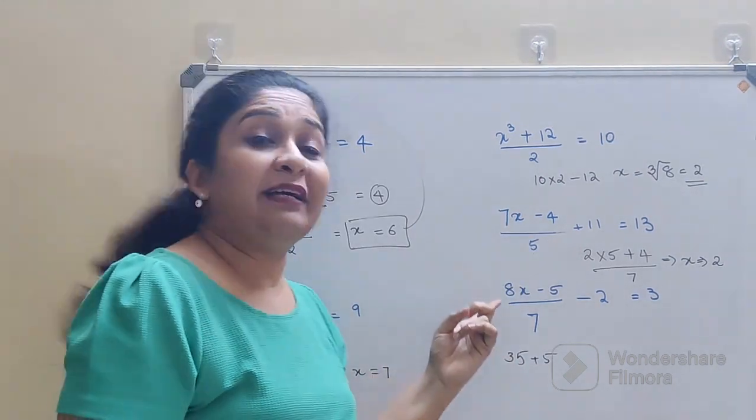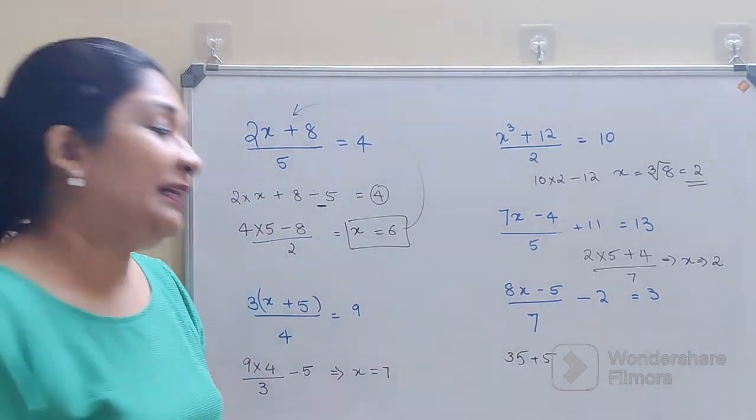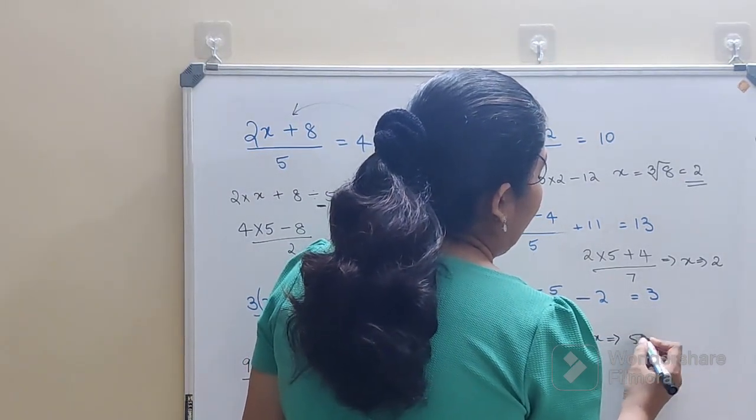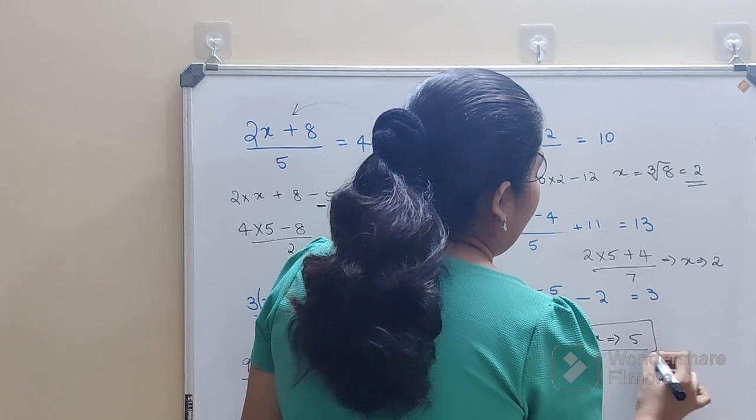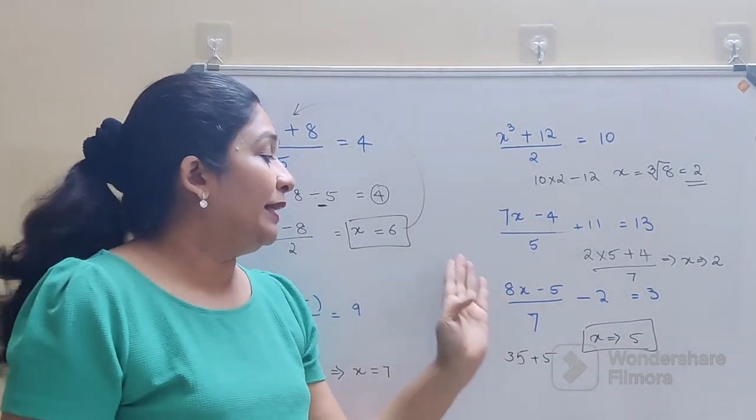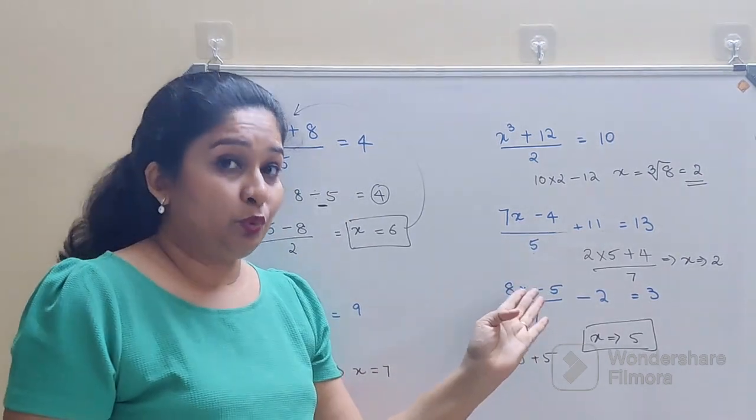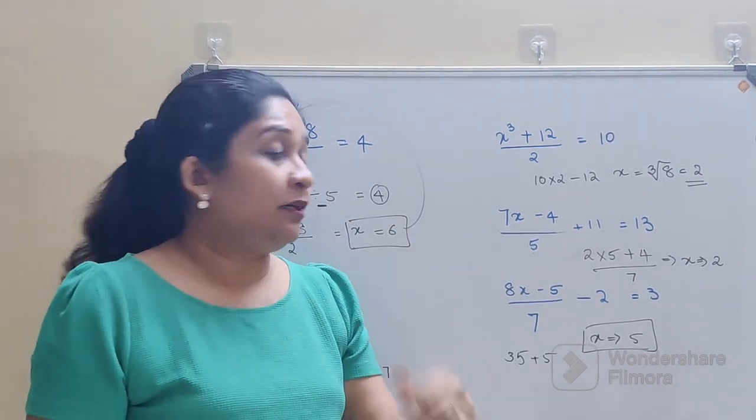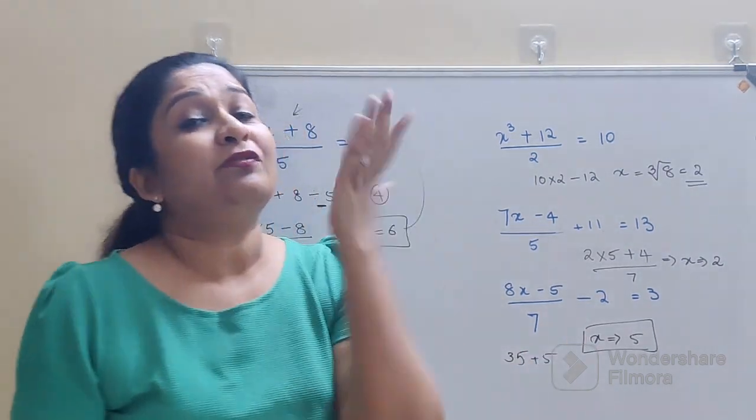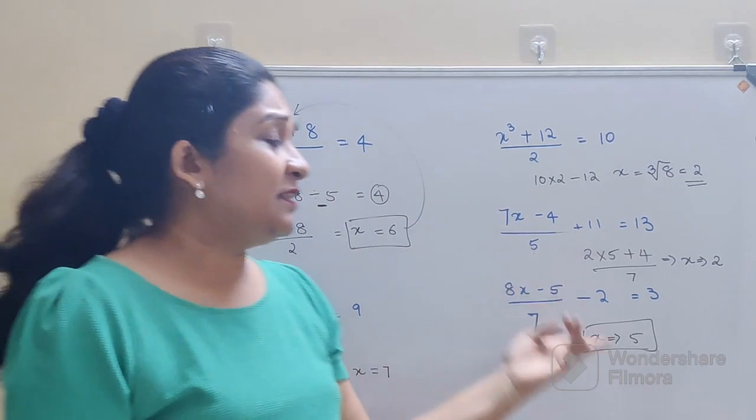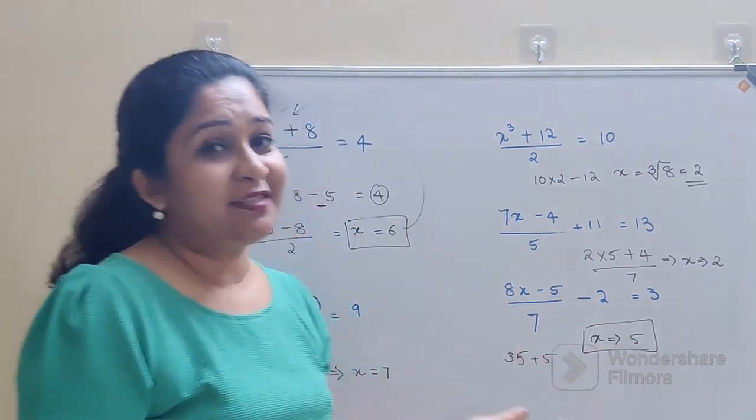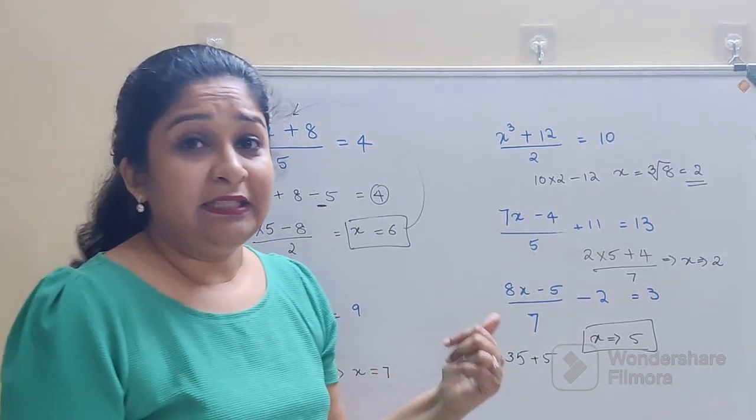Now if you see, here when you substitute, so 8 into 5 gets you 40, 40 minus 5 gets you 35, 35 upon 7 gets you 5. Now 5 minus 2 gets you 3. So the answer for this one is just 3, and that is absolutely correct. So I hope you have gotten the hang of doing algebra very, very easily.